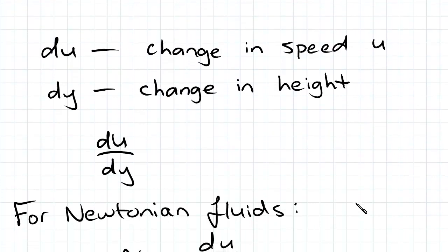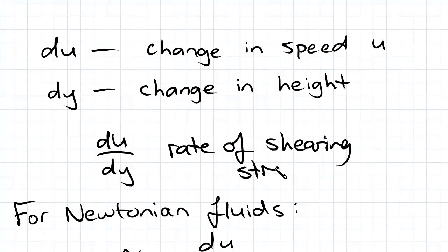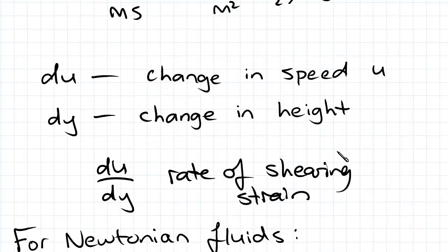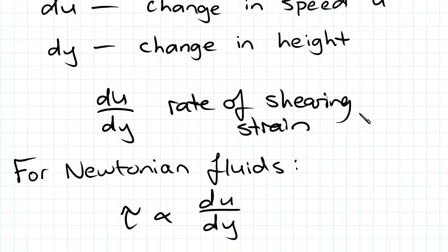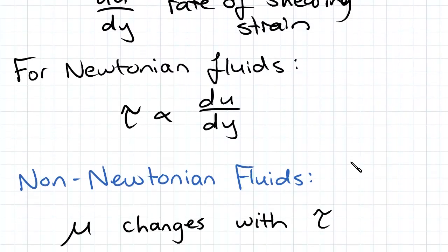So this term here du on dy is also called the rate of shearing strain. And it's just the change in speed u on the change in height.